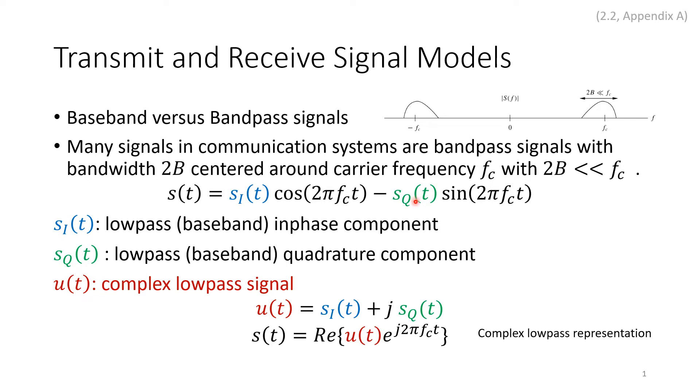That's what we call the complex lowpass representation or equivalent. u(t) is a complex lowpass signal, and s(t) is the complex lowpass representation.